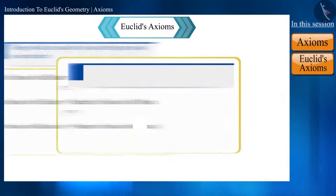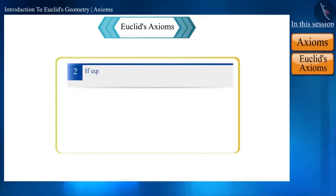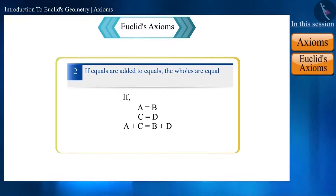According to Euclid's second axiom, if equals are added to equals, the wholes are equal. That is, if a is equal to b, and c is equal to d, then if we add c to a, and d to b, then a plus c will be equal to b plus d.